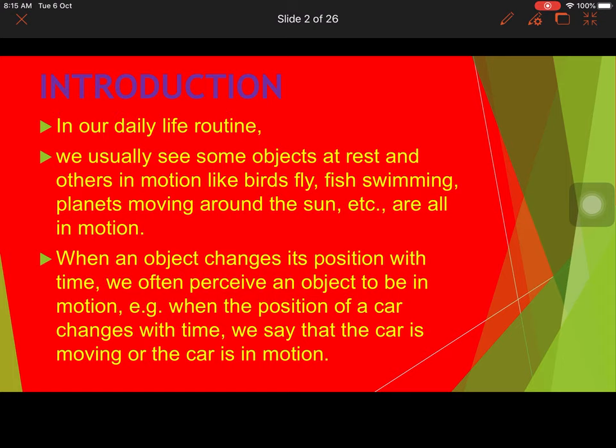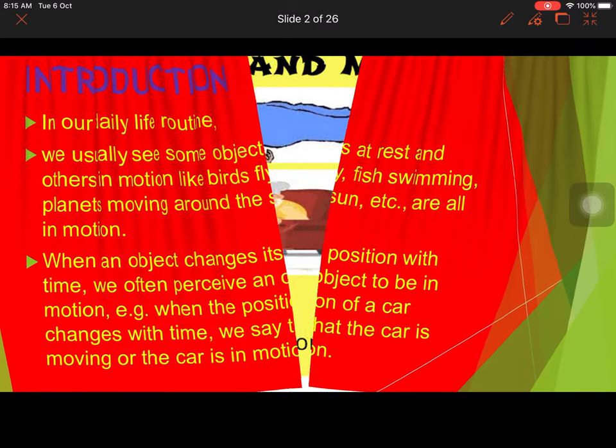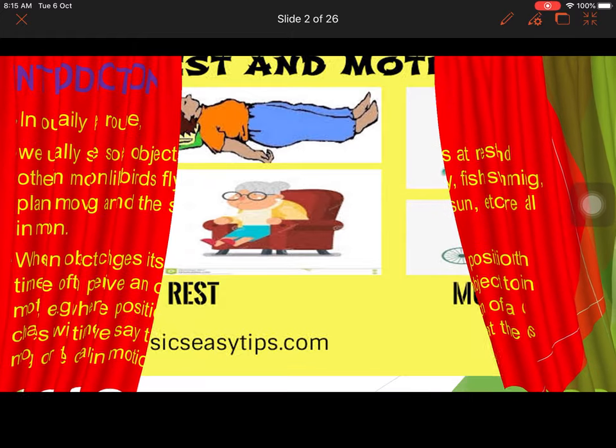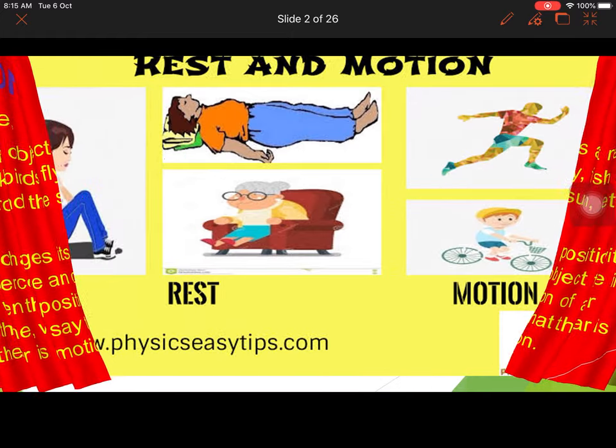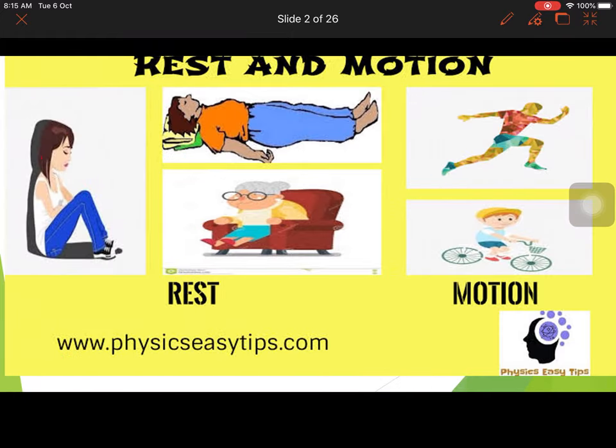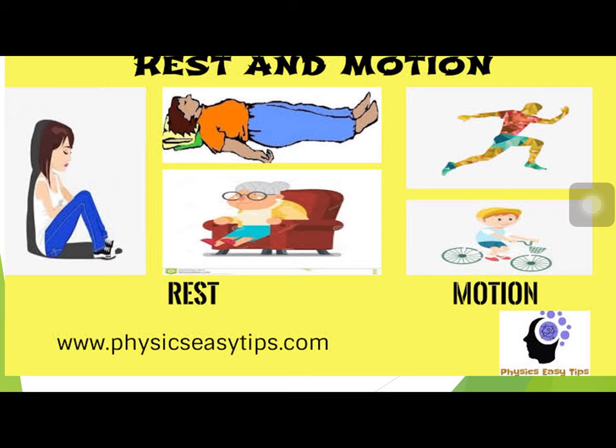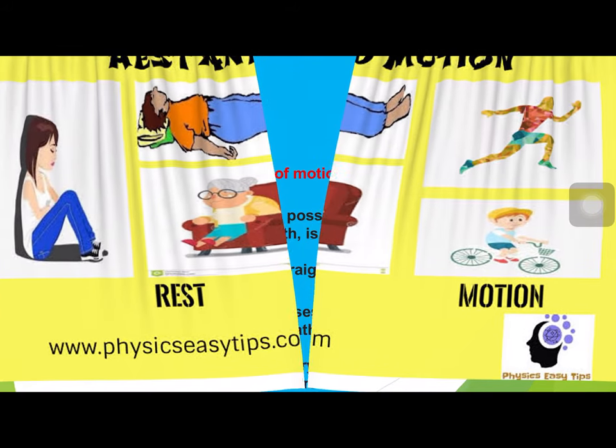For example, a position of a car changes over time — we say the car is in motion. You can see from this picture the difference between rest and motion: the girl sitting idle, the boy sleeping, the grandmother watching TV are all at rest, while a boy running and a boy cycling are in motion.